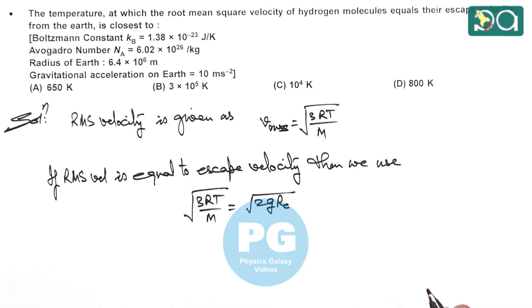Here R_E is the radius of Earth. So from here we can calculate the temperature, squaring the two sides of equality we are getting 2GR_E M by 3R.